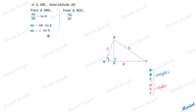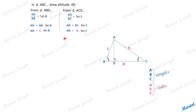Now for the other right triangle. Taking the ratio AD upon AC — opposite side by hypotenuse in that triangle — this gives sin C. Cross-multiplying: AD = AC·sin C = b·sin C. We now have two expressions for AD. Since both equal AD, we can say c·sin B = b·sin C — an equation connecting two sides and two angles of the original triangle.